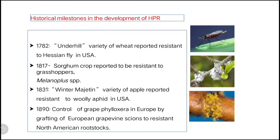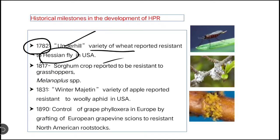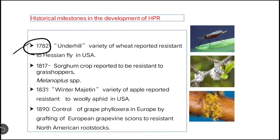Next we will see the historical milestones in developing HPR. First, in the year 1782, the Underhill variety of wheat was reported to show resistance against the Hessian fly in USA. This is a specific type of resistance because only the Underhill variety shows resistance to only the Hessian fly.